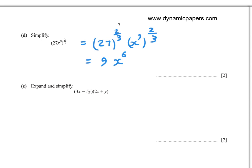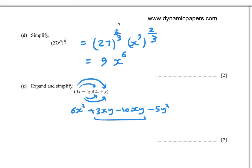Part (e): Expand and simplify (3x minus 5y)(2x plus y). Multiplying: 3x times 2x equals 6x squared, 3x times y equals 3xy, negative 5y times 2x equals negative 10xy, negative 5y times y equals negative 5y squared. Combining like terms: 6x squared minus 7xy minus 5y squared.